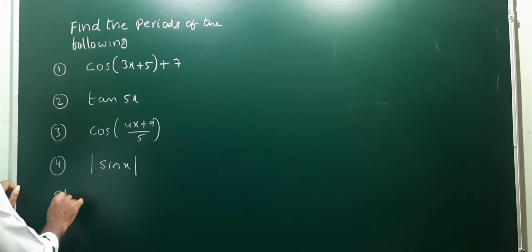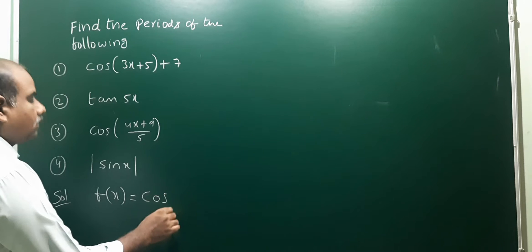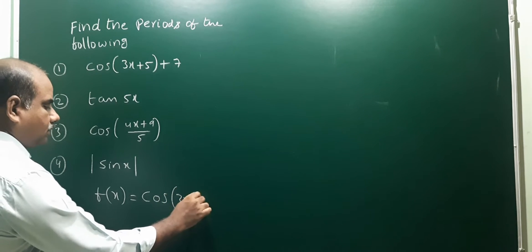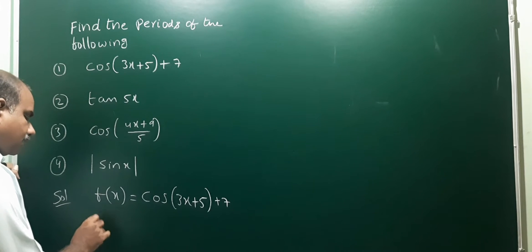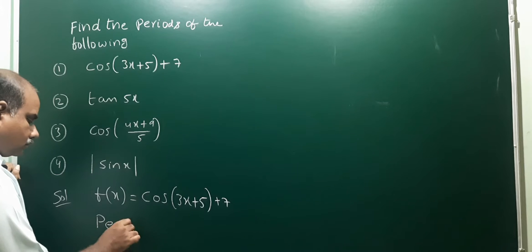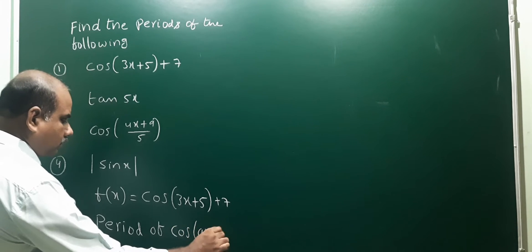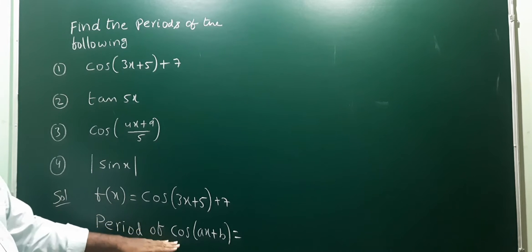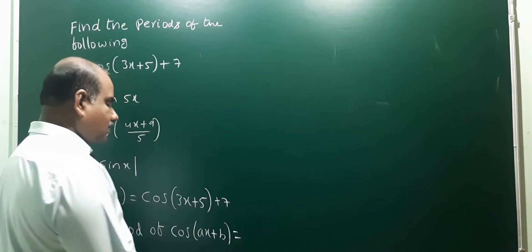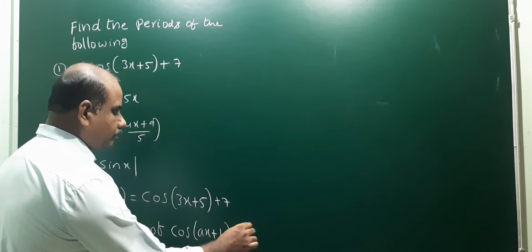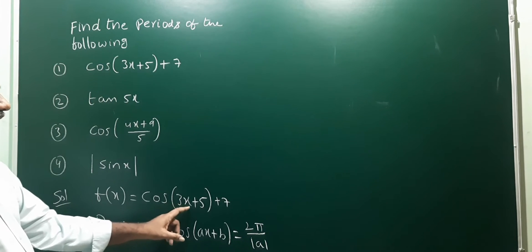For the first function, f(x) = cos(3x + 5) + 7. The formula to use is the period of cos(ax + b), which is 2π divided by mod a.